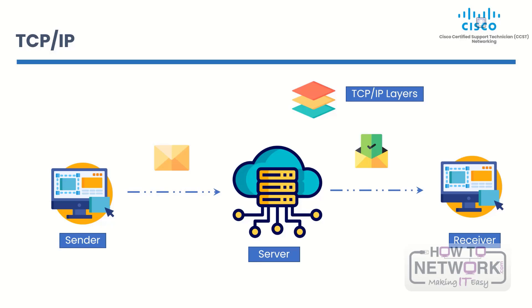The application layer has functions that users or their programs can use. These functions are very specific to the application being used. It gives user applications the services they need to talk to each other over the network, and it's also the layer where user network processes live. These processes include both the ones that users do directly and the ones they don't know about. There are many protocols in the application layer, and new ones are already being made.